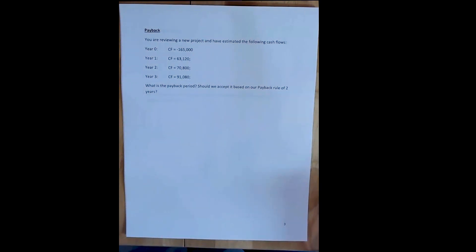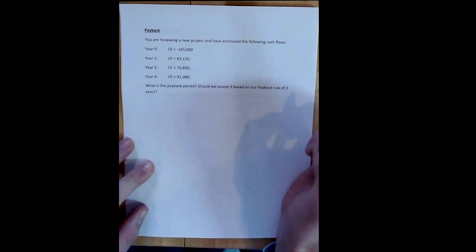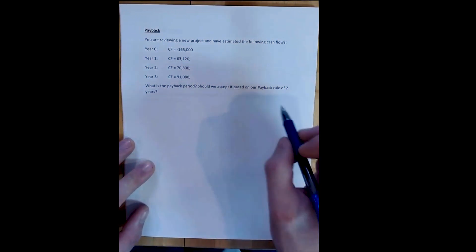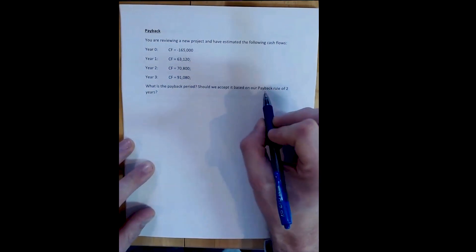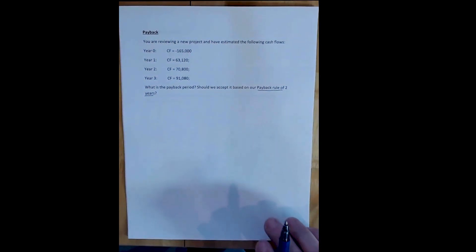The payback period is simply how long it takes for the positive cash flows to equal the initial cost, and we accept it based on a payback rule that we choose. This is going to be different for every firm and for every project. The payback rule and the fact that it's arbitrarily chosen is one of the downfalls of using the payback rule to decide whether a project is good or not. But it does have its uses, specifically in projects that are of lower value, for smaller firms, or where you don't want to use all the time and effort to do the net present value.